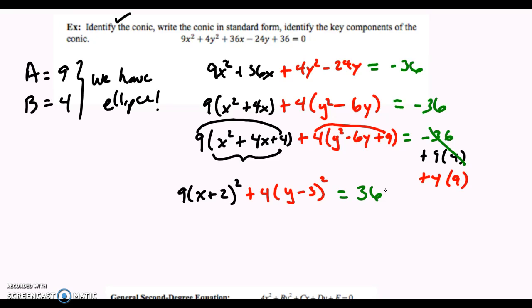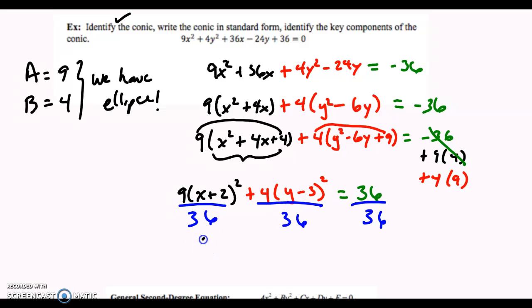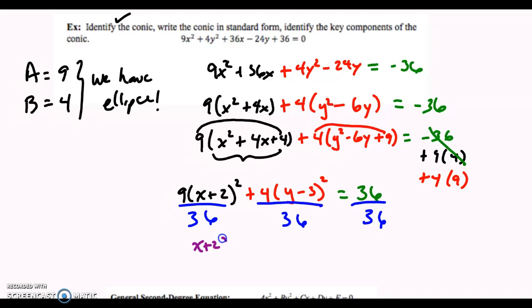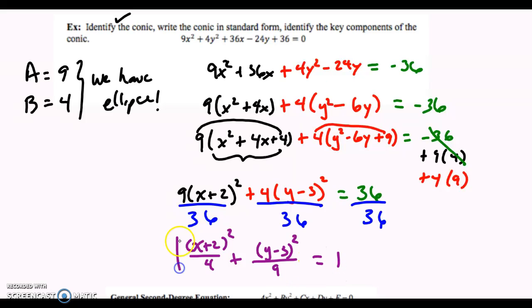You should know that the standard form of an ellipse will always have equals 1 on the right side of the equation. So what I want to do finally is take this 36 and divide everything by 36 — dividing the right side and each of the left parts by 36. I get 9 over 36, which reduces to one-fourth. So I have (x+2)² over 4 plus (y−3)² over 9 equals 1. This is my standard form of the ellipse.